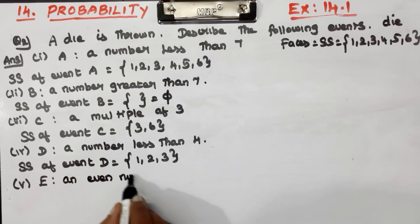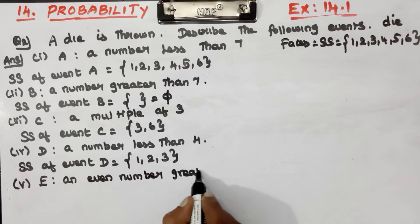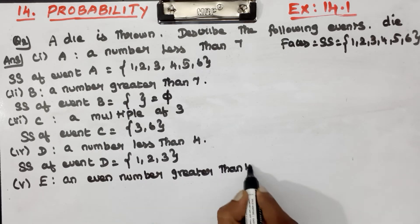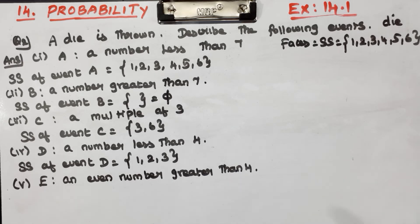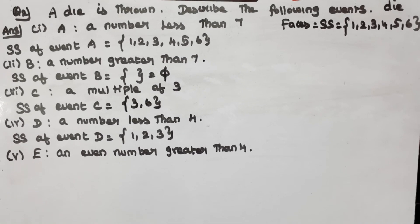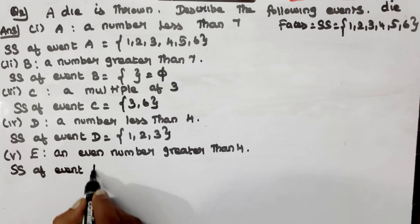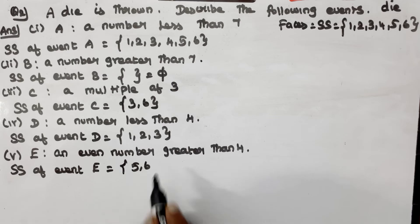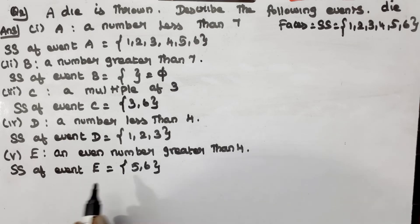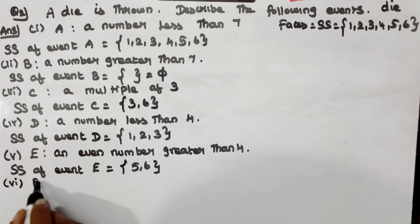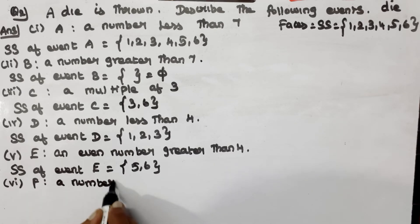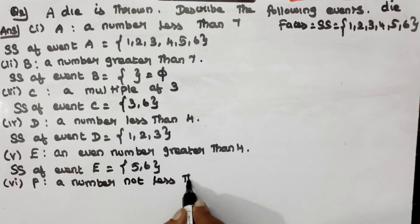Event E: even numbers greater than 4. Event F: numbers not less than 3.